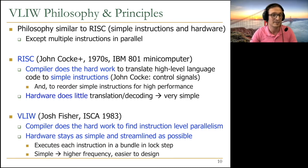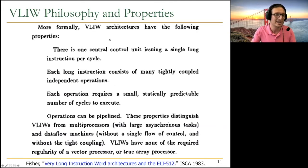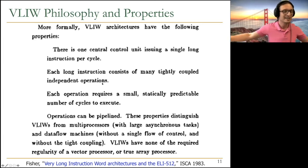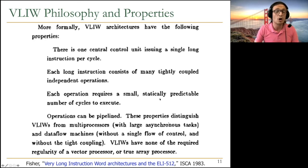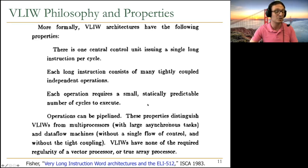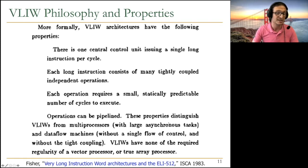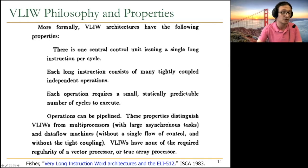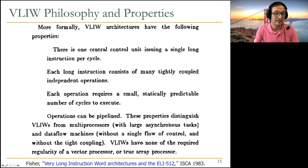The formal VLIW definition from Fisher's paper: one central control unit issuing a single long instruction per cycle; each long instruction consists of many tightly coupled independent fine-grained operations; each operation requires a small, statically predictable number of cycles to execute; operations can be pipelined. This distinguishes VLIW from multiprocessors, which parallelize large tasks, and from data flow machines, which lack a single flow of control. VLIW also requires none of the regularity needed by vector or array processors.